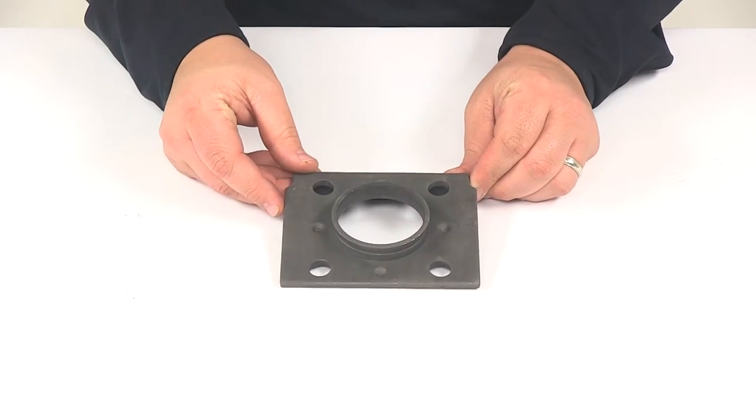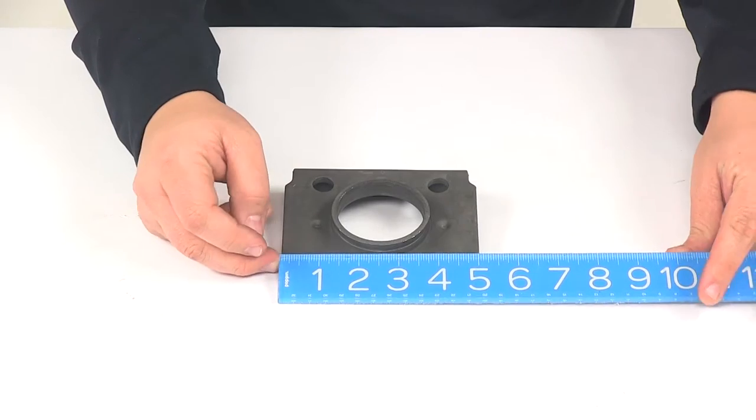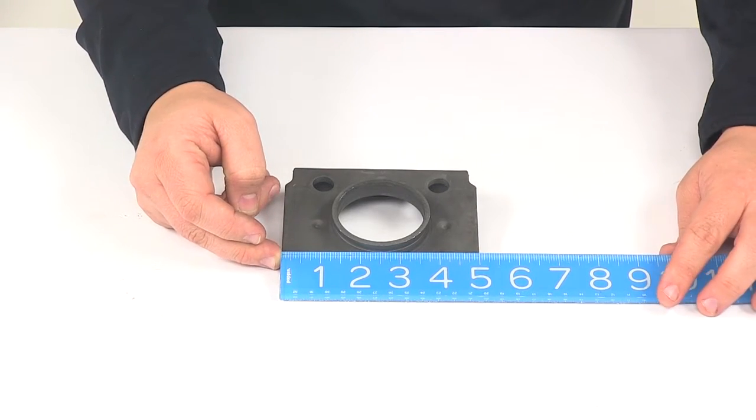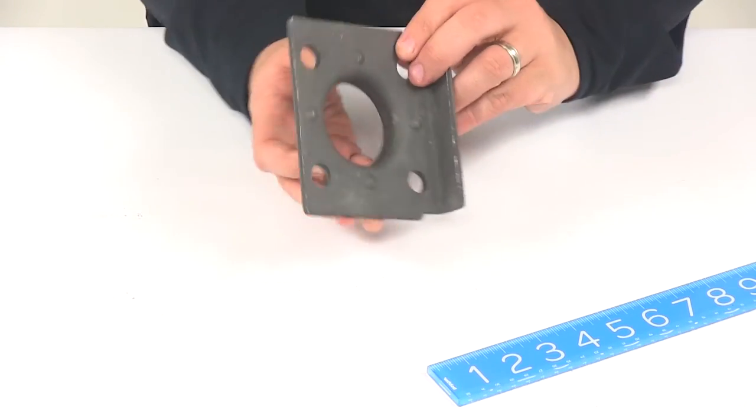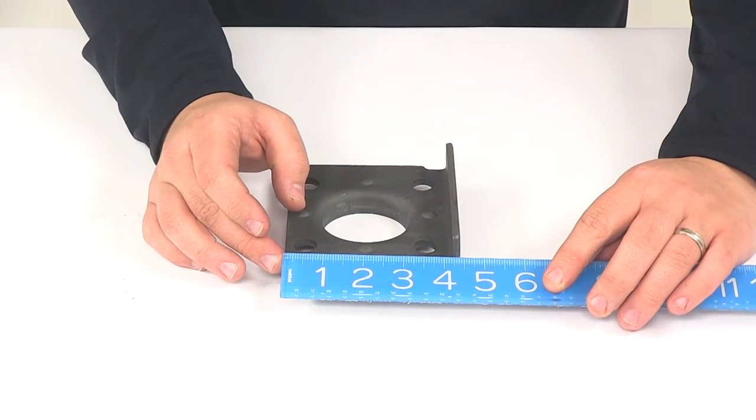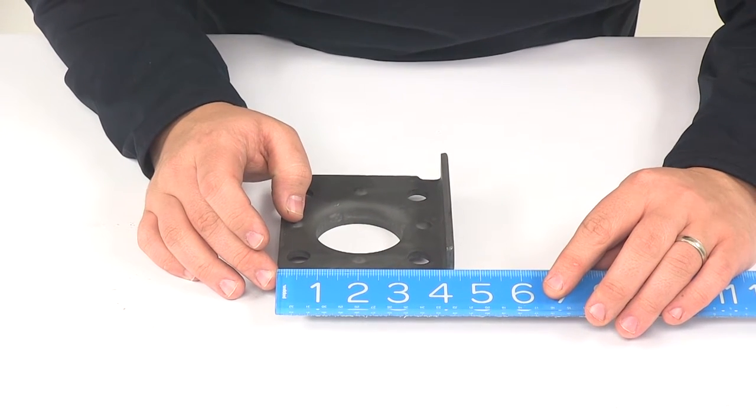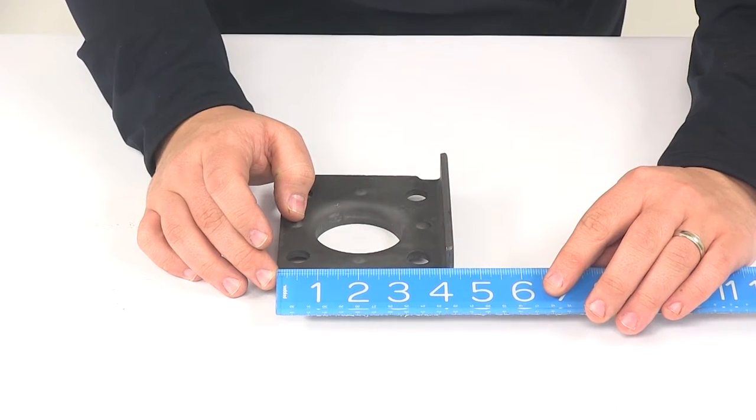To go over the overall measurements real quick, it's going to give us a measurement this direction from outer edge to outer edge of five inches, and then going in this direction, outer edge to outer edge, we're looking at a measurement pretty close to four and one quarter inches.